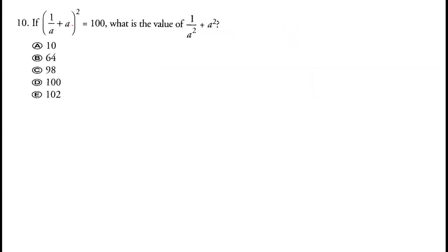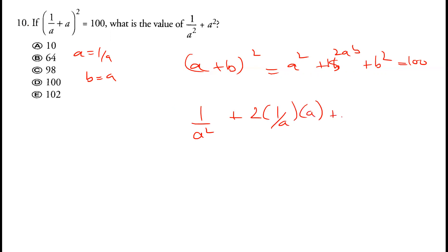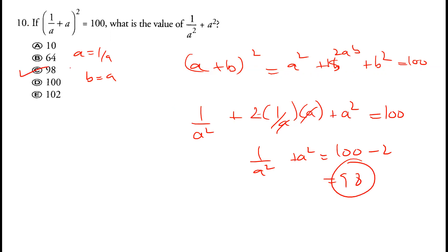If 1 over a plus a squared equals 100, and we write (1 over a plus a) squared as 1 over a squared plus 2 times 1 over a times a plus a squared equals 100. Since the middle term 2 times 1 over a times a simplifies to 2, we get 1 over a squared plus a squared equals 100 minus 2, which is 98. Option C is correct.